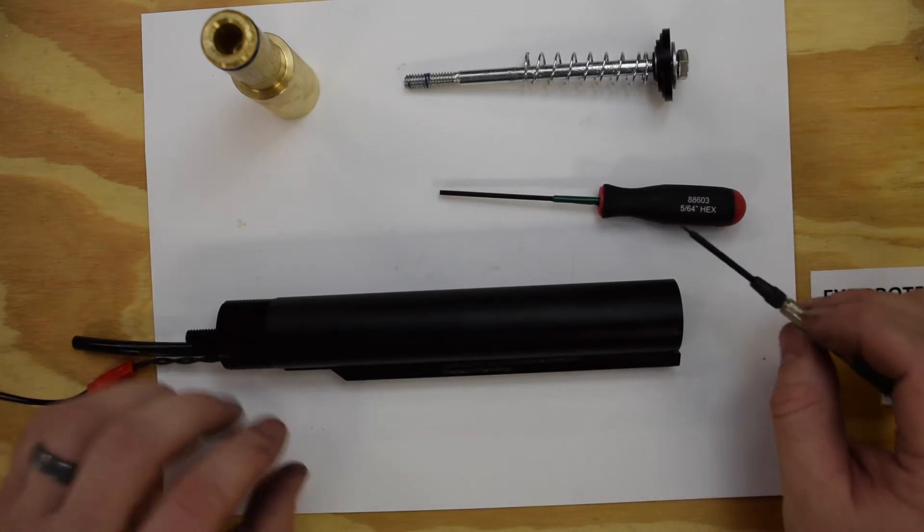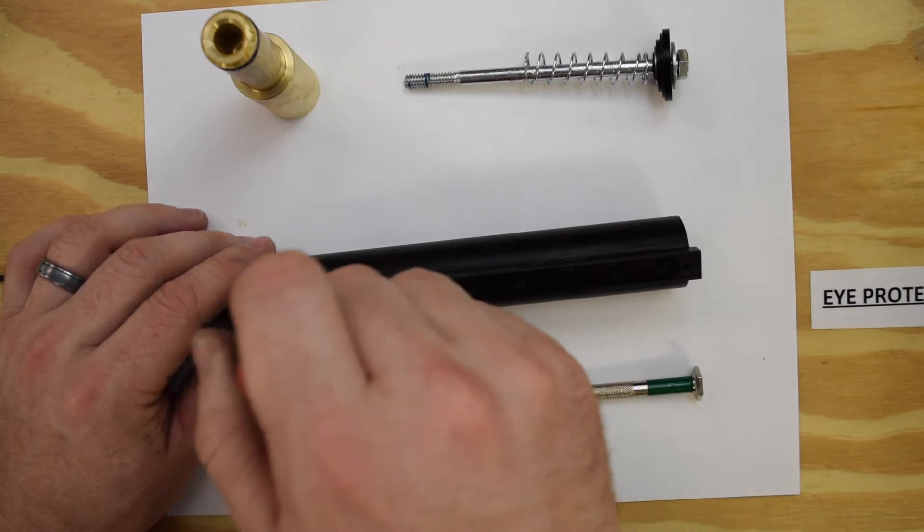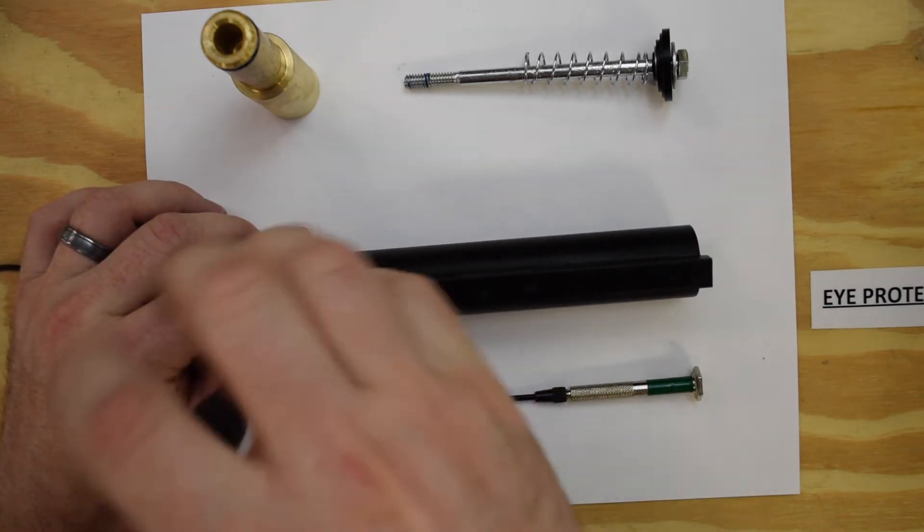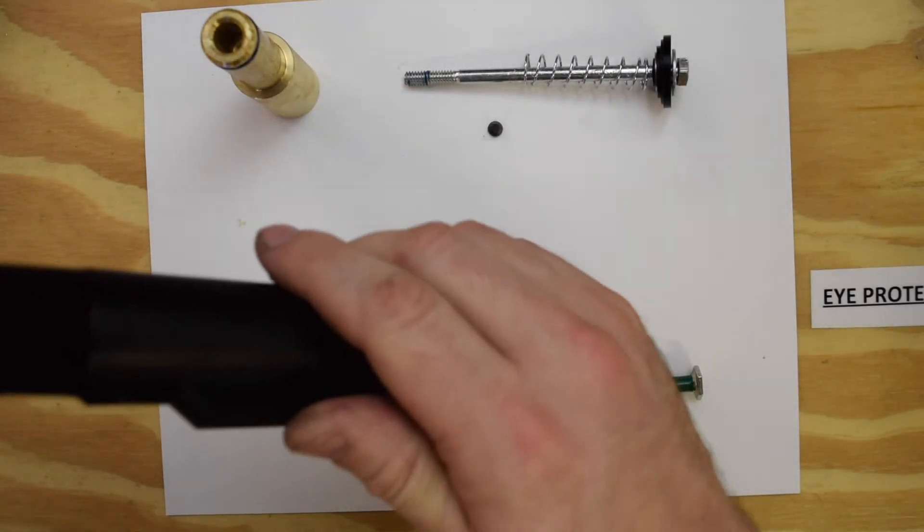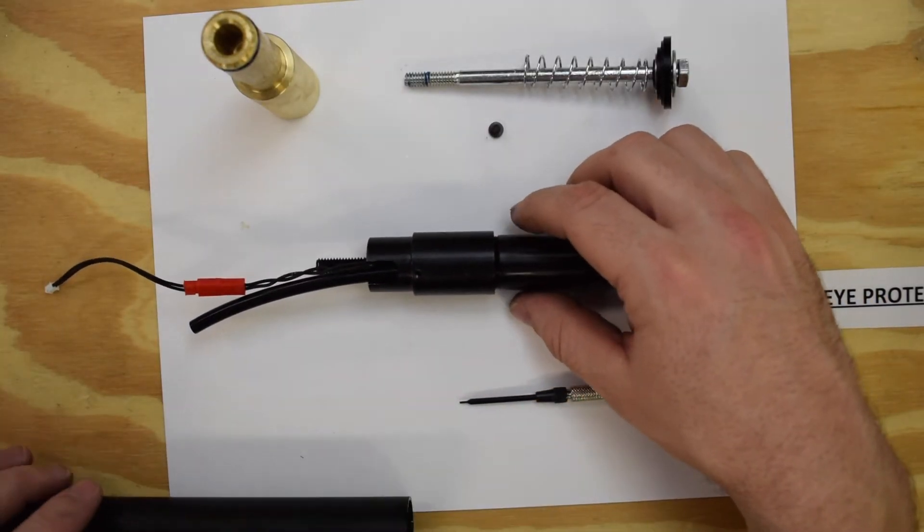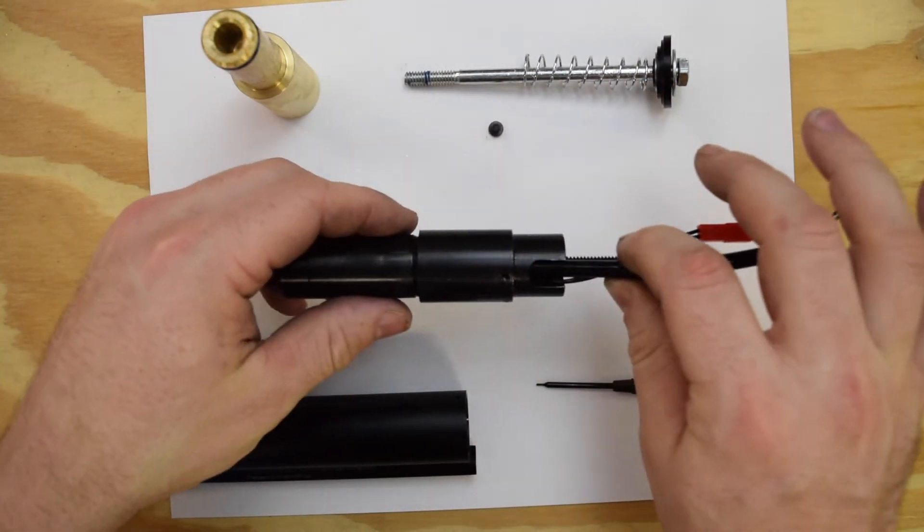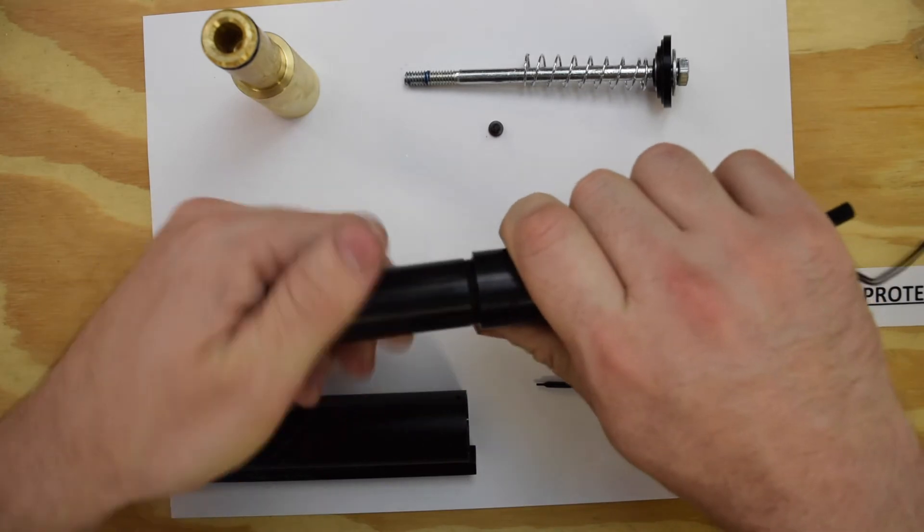To take this apart, what we're going to do is take this screw out using our 5/64. At this point, this whole piece can come apart. Now this is the core of your system. This is where your valve and your airline go in. At this point, we can just unthread these two pieces.